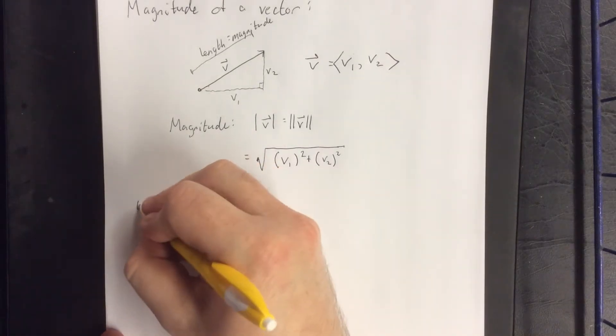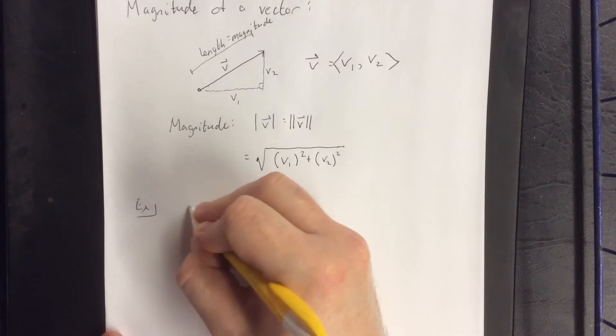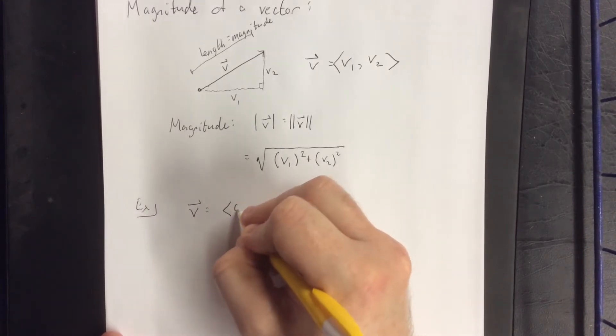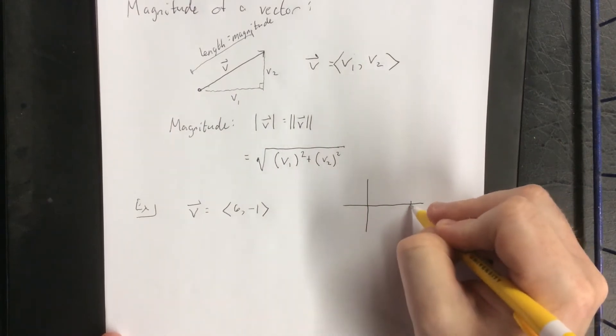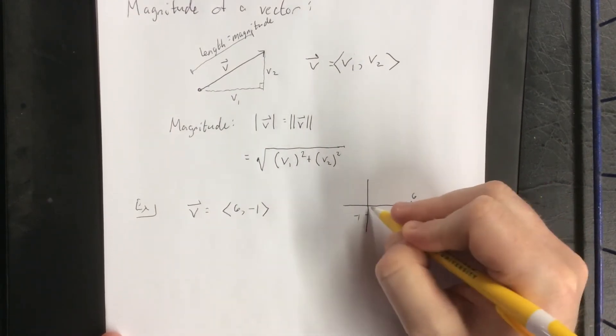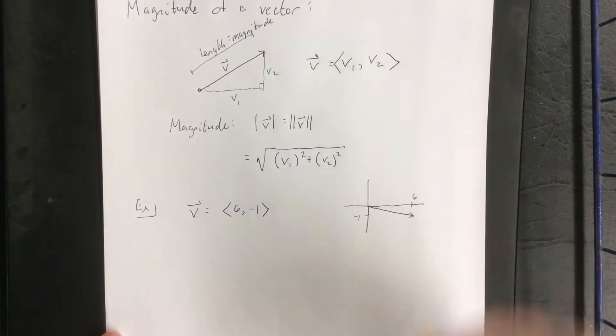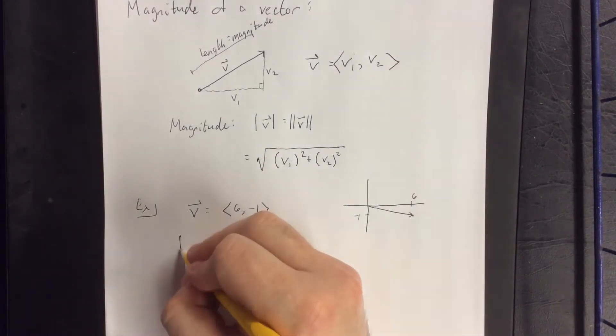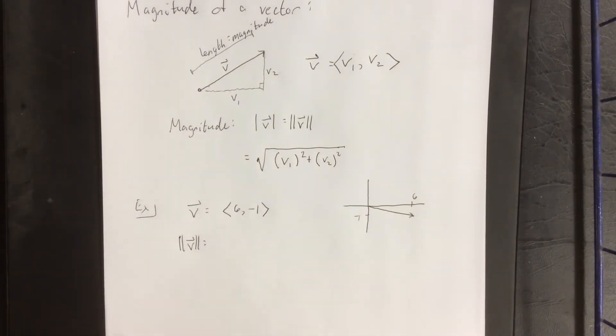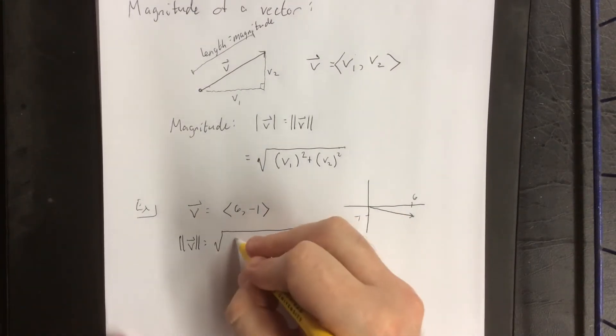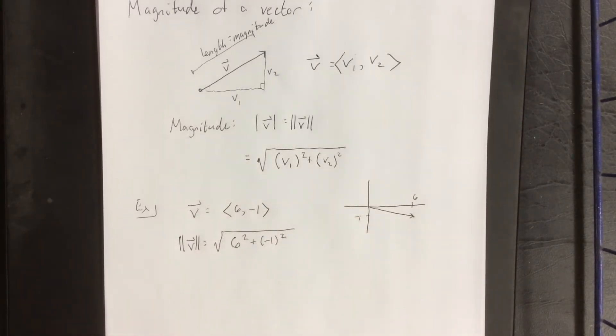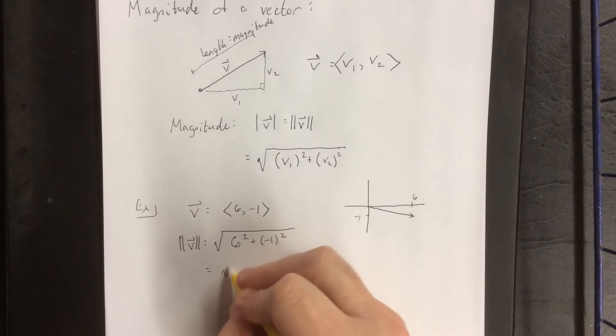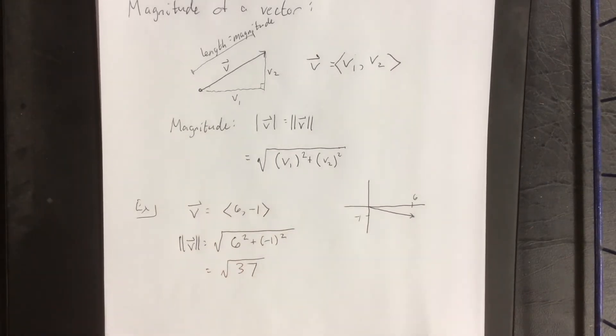For example, if I consider the vector v = (6, -1), that would be a vector that looks kind of like this. To find the magnitude of this vector, we'll use the double bars. This would be the square root of 6 squared plus negative 1 squared. Squaring each and adding them together gives us the square root of 37.